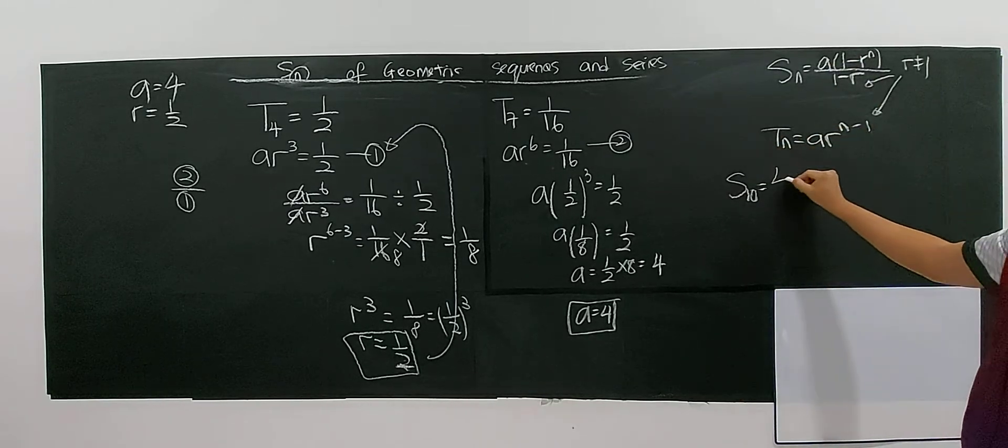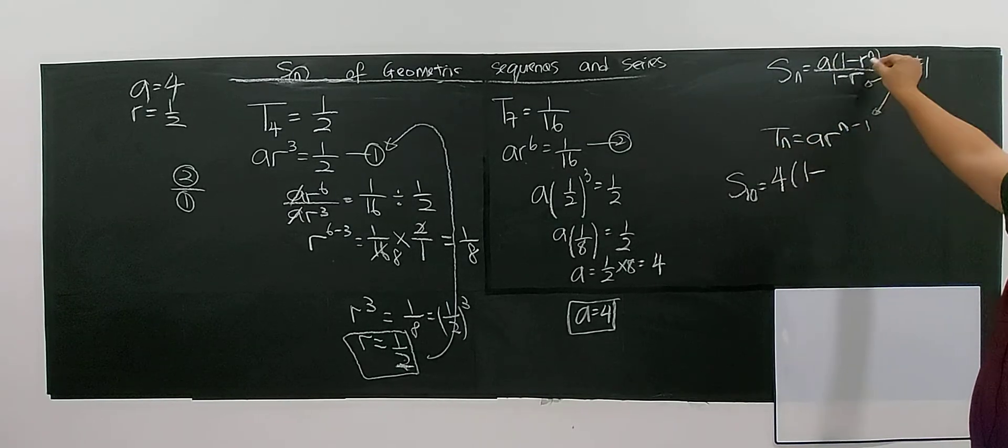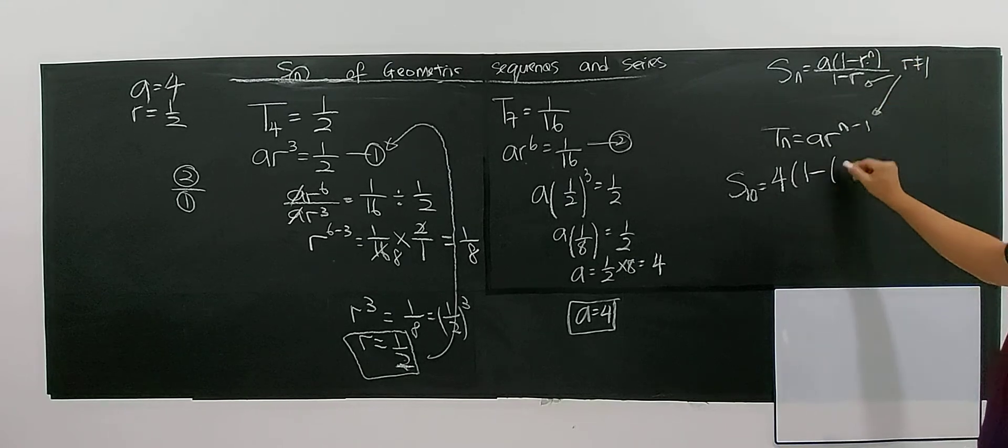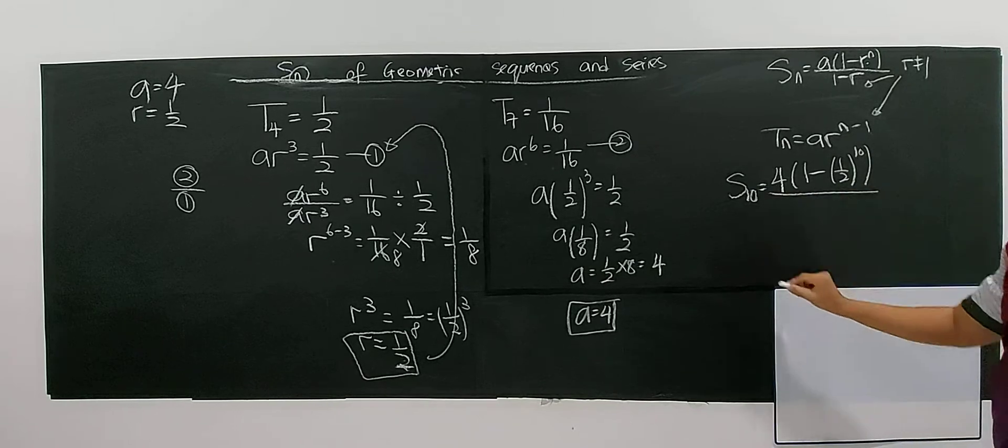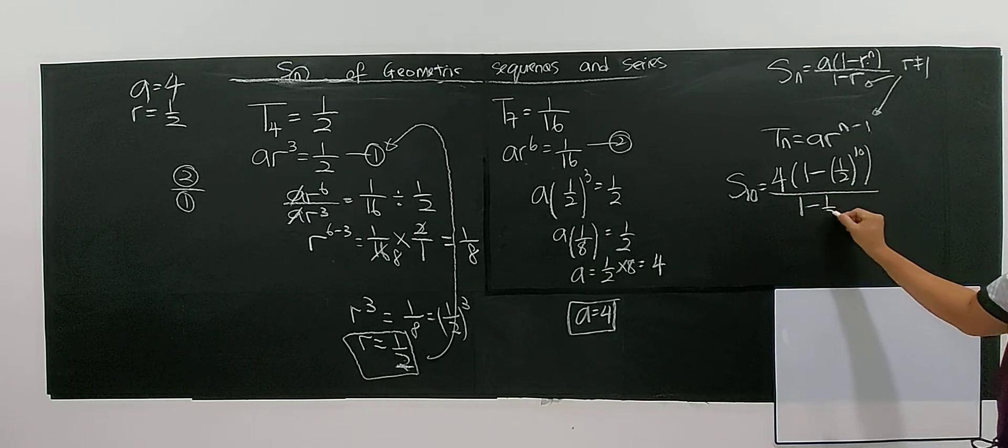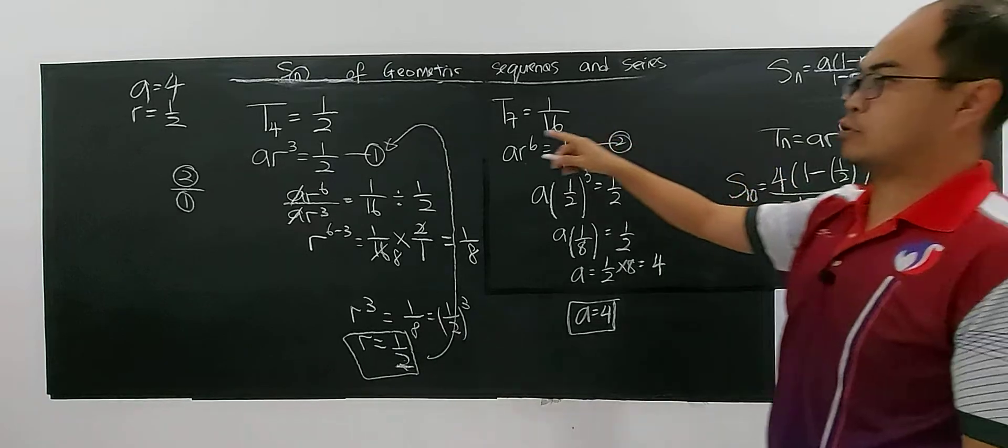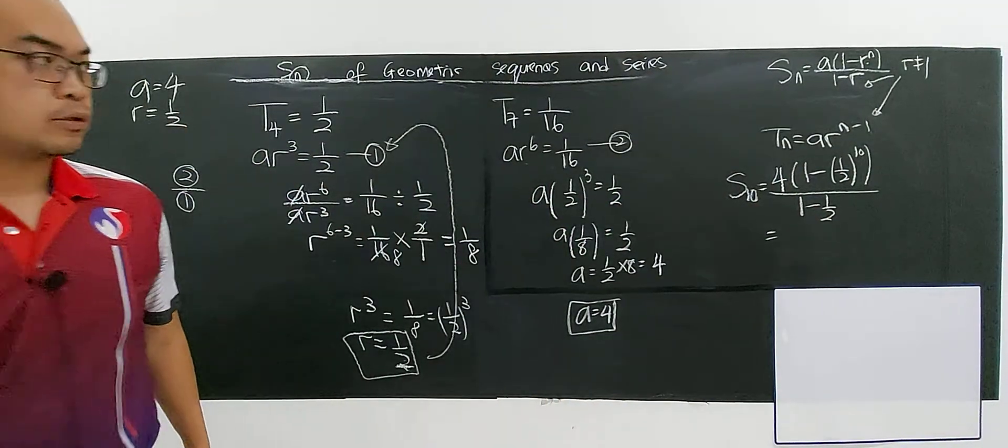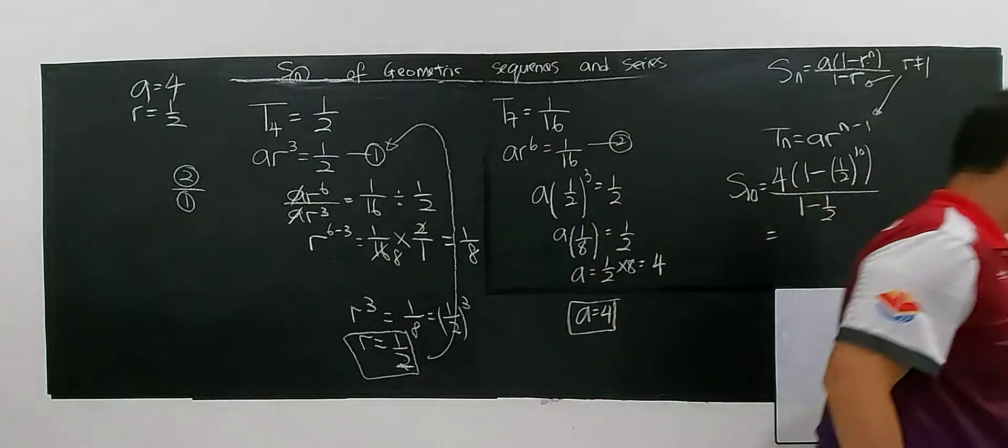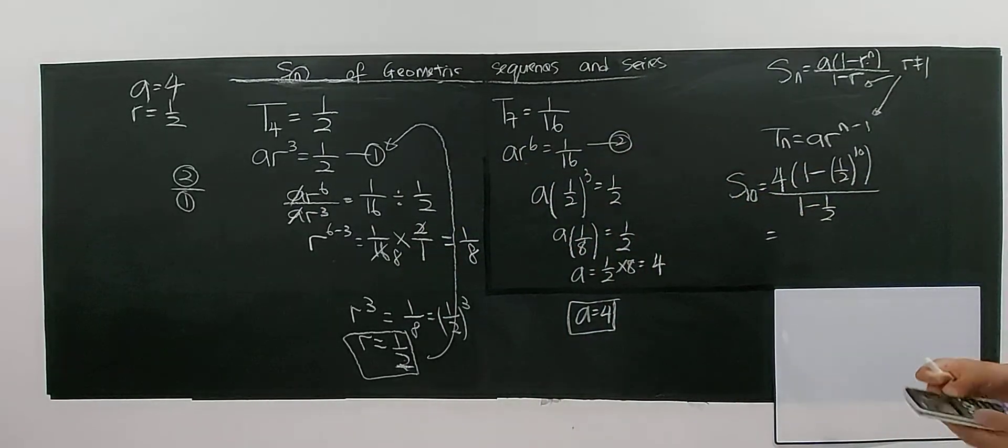So you just apply the formula directly. The A is what? The A is 4, plug 4. So 1 minus R, what is R? R is 1 over 2 to the power of 10 divided by 1 minus 1 over 2. If you see carefully, 1 over 2. And so now you're using calculator and plug in all the value, then you will get your answer.